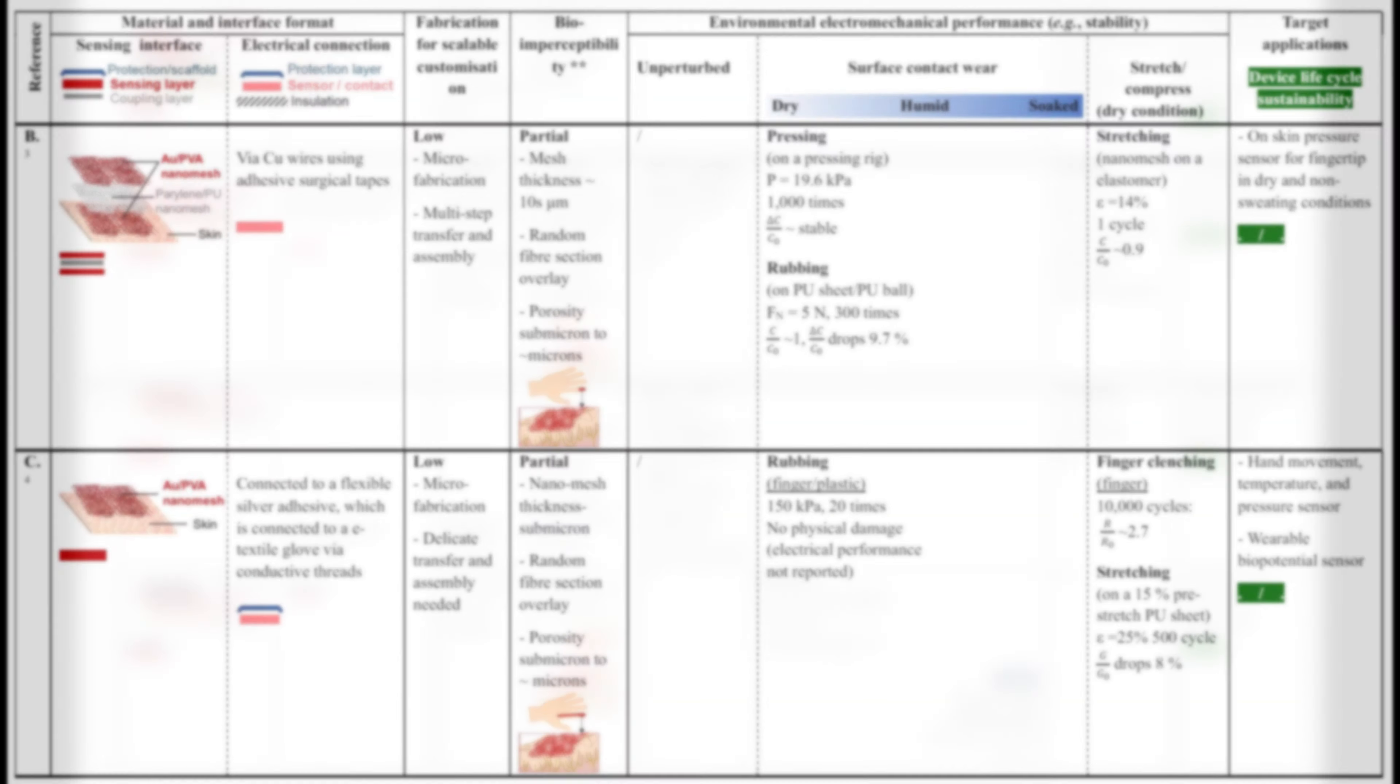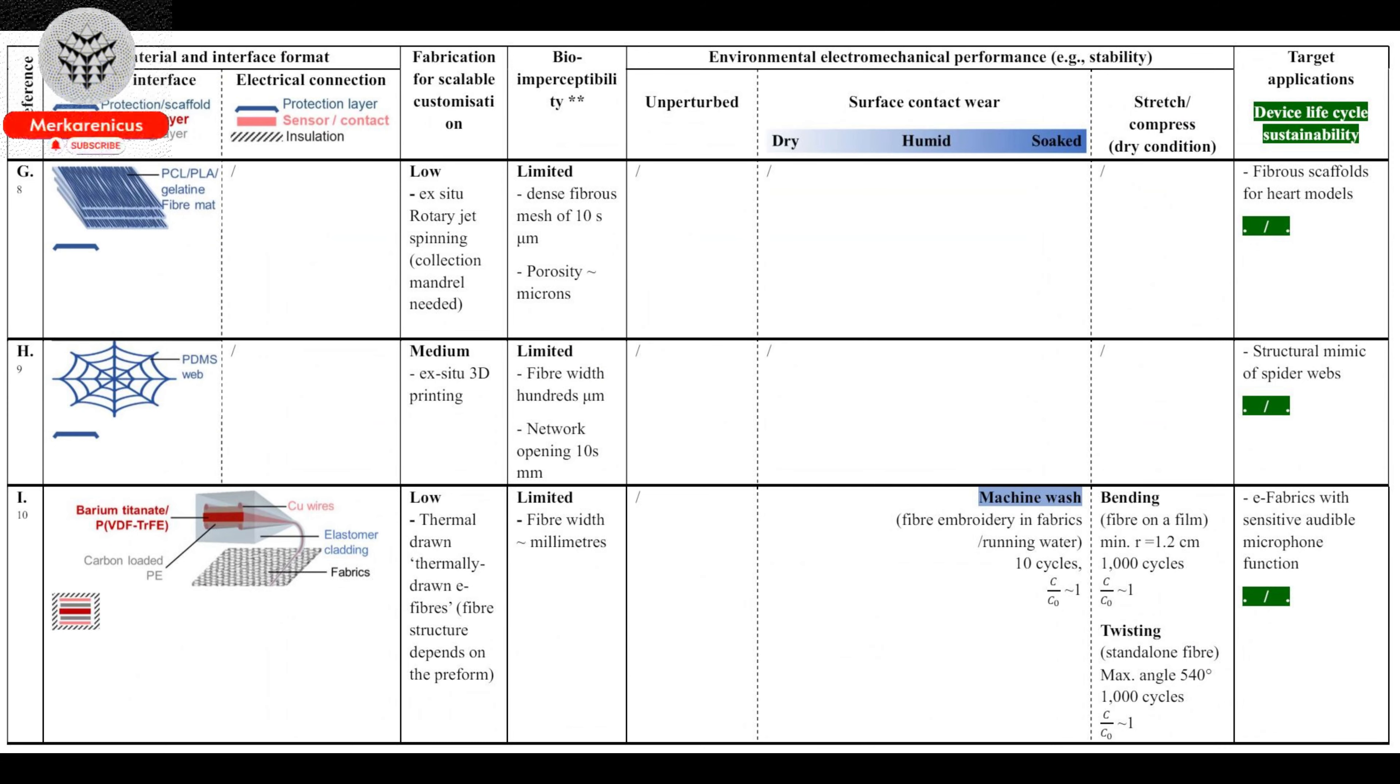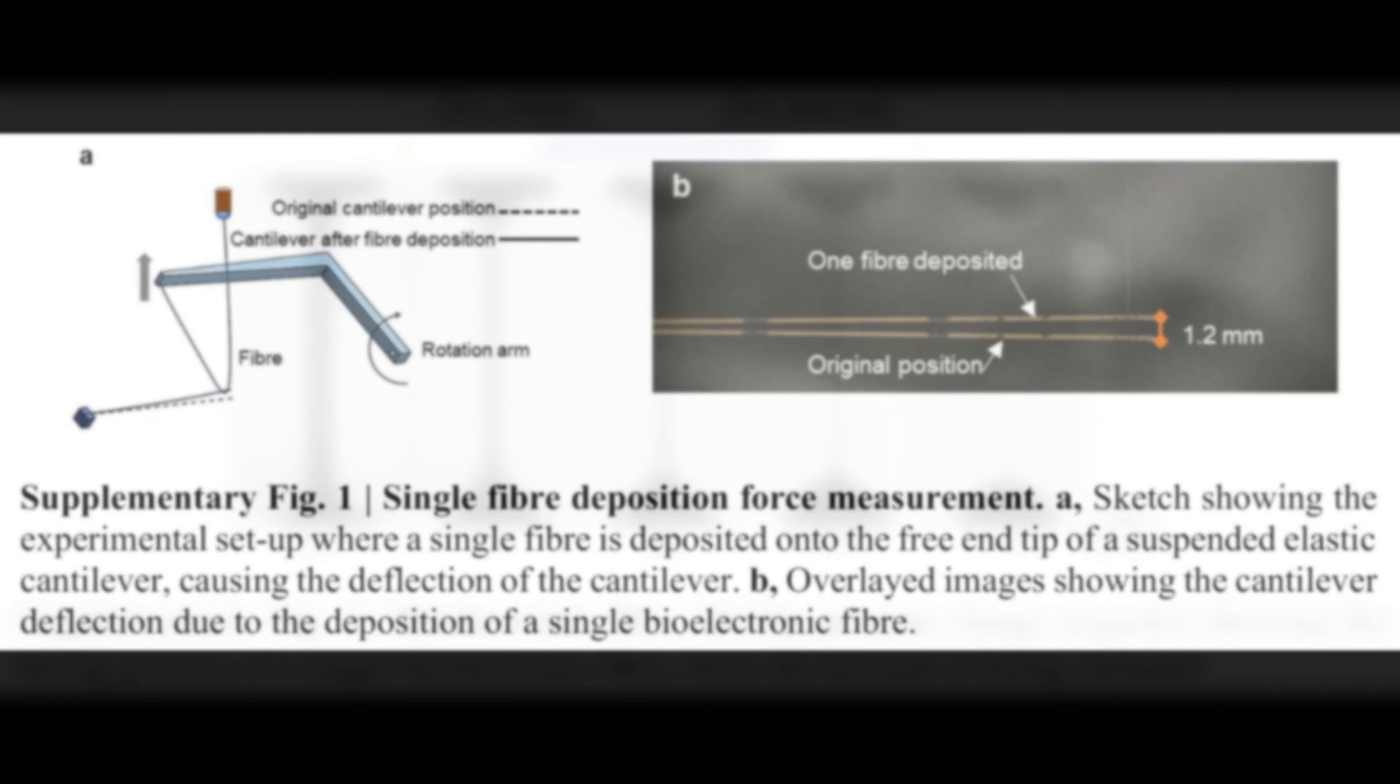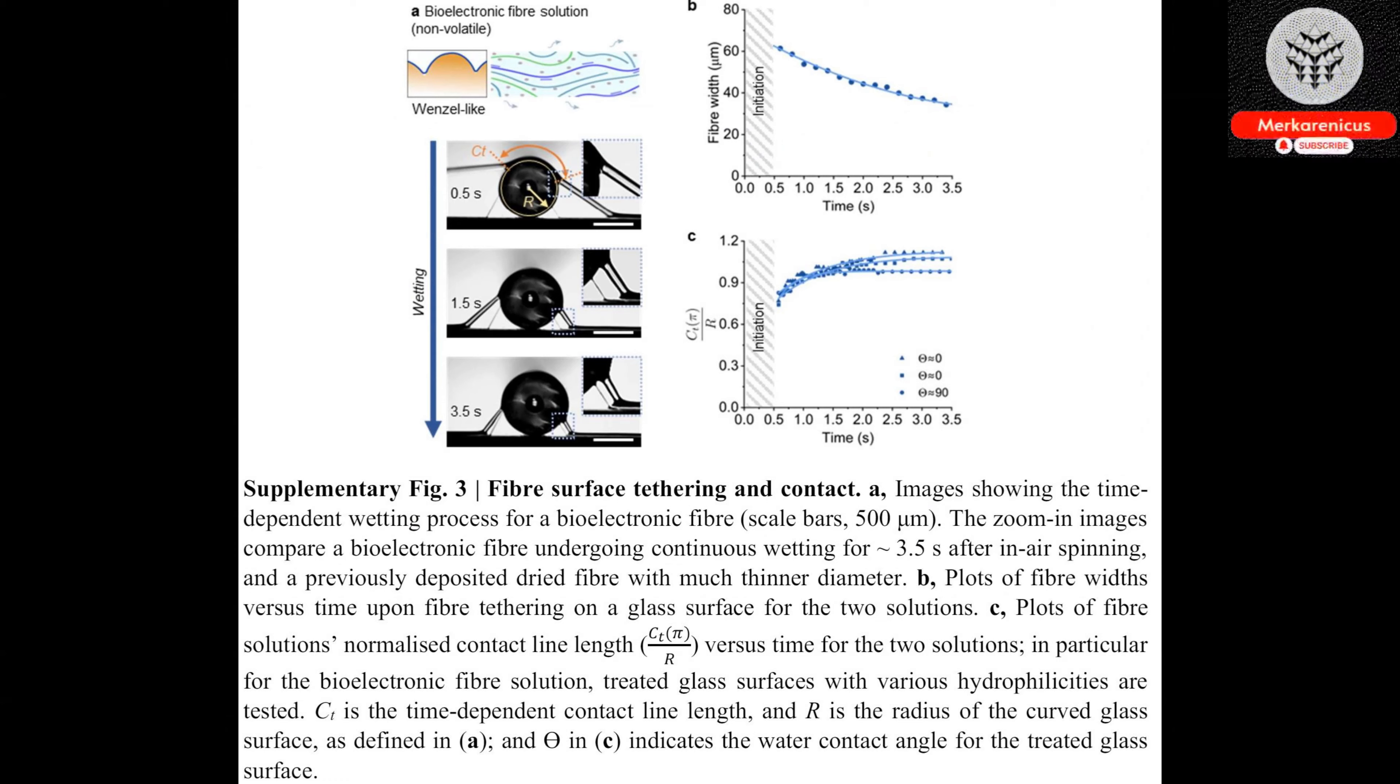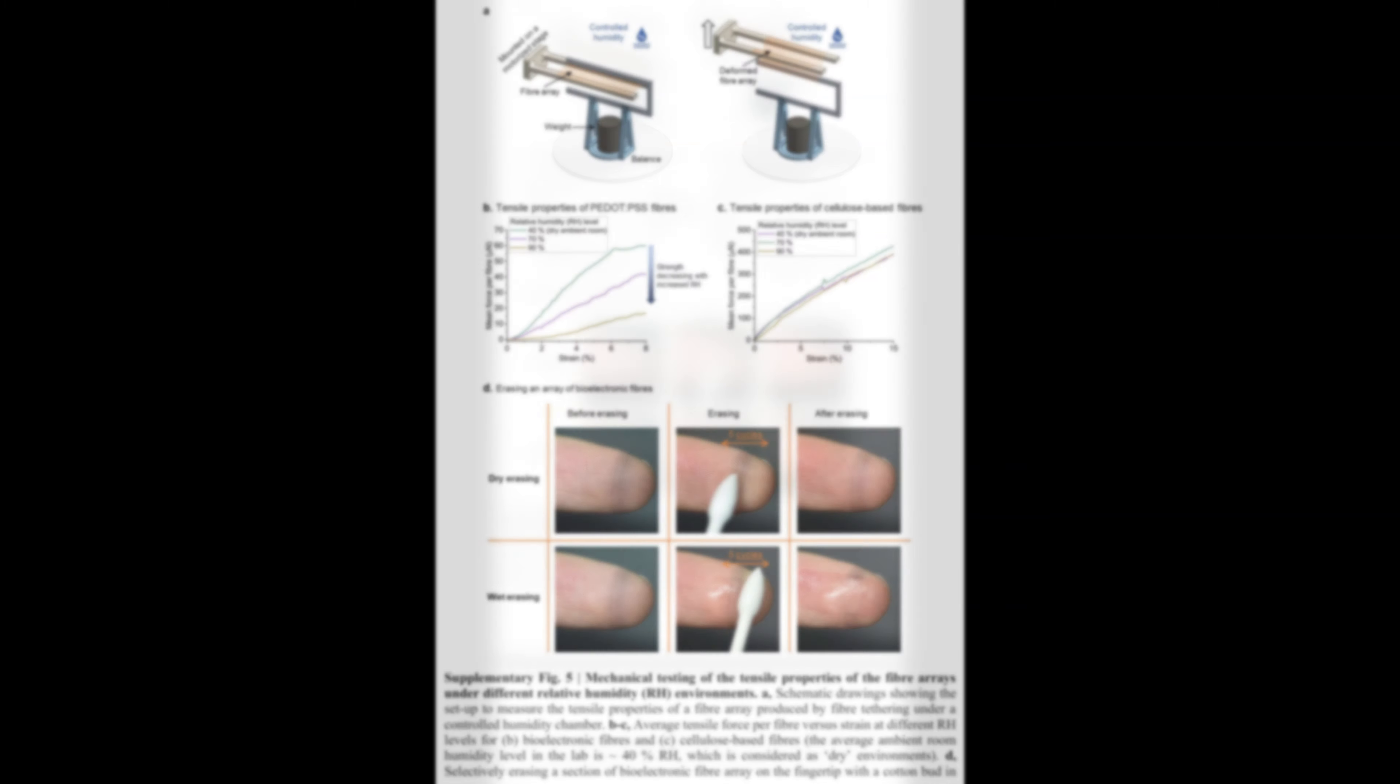Researchers from the University of Cambridge have devised a technique that draws inspiration from the adhesive and malleable nature of spider silk. This innovative method, known as spider silks, combines bioelectronics with the ability to adhere to various surfaces, allowing for the incorporation of diverse sensing capabilities into the interconnected network. The researchers were able to print the fibers, which are significantly smaller than a human hair, onto the delicate seed head of a dandelion without causing any damage to its structure, thanks to their incredibly lightweight nature.